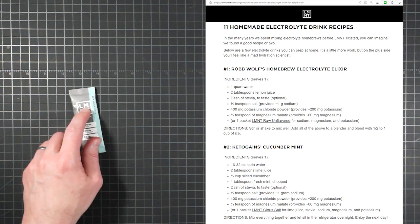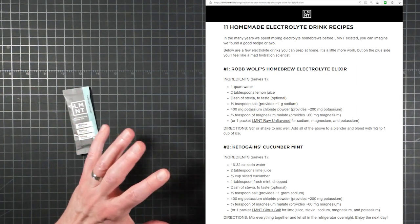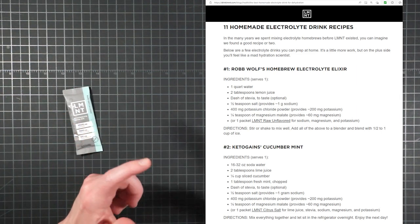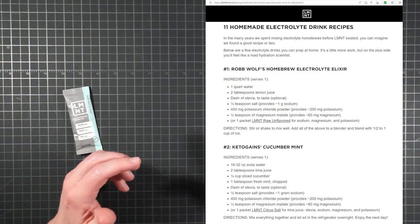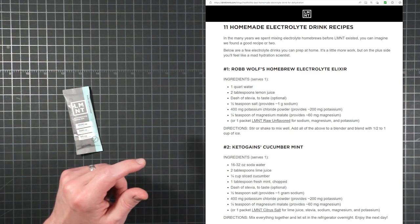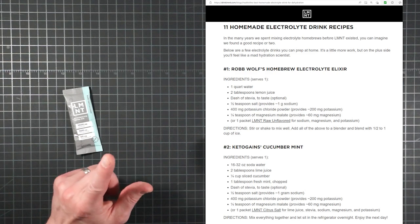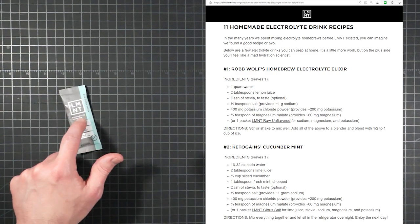Over at Element, they actually have a list of recipes for making your own electrolyte mixes. In addition to fun fruity flavors, they've got savory ones for sipping with bone broth, recipes with caffeine, and more. They include magnesium as well, the same as in their packets.